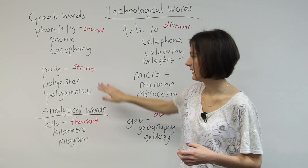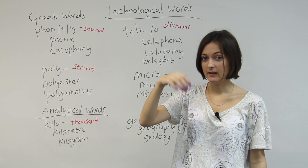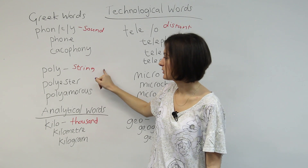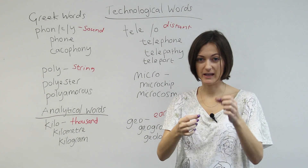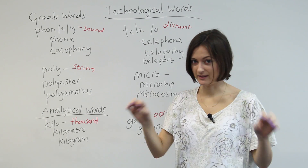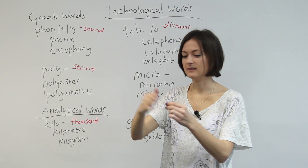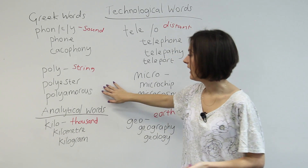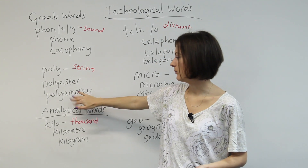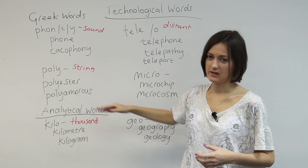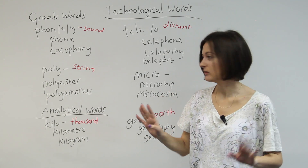'Poly' means many — we see this in lots of words like polyester. Here's a word: polyamorous. So we've got 'poly' meaning more than one, and the root 'amor' is related to love. What this word means is relationships that are open, where people can have more than one partner. Polyamorous love — different lovers.